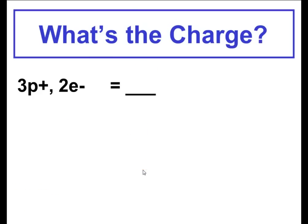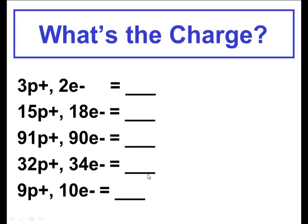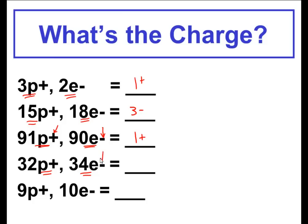Now let's use the words protons and electrons. Here are a couple of problems — press pause and work through them. It's really the difference between protons and electrons — what is your numeric difference? Three positives and two negatives: the answer is one plus. Over here, fifteen pluses and eighteen negatives — I have three more negatives, so it's a three minus charge. Over here, ninety-one protons and ninety electrons give me a one plus charge. Thirty-two protons and thirty-four electrons — two more negatives — that's a two minus charge. And nine positives and ten negatives: I have more on the negative side, giving a one minus charge.